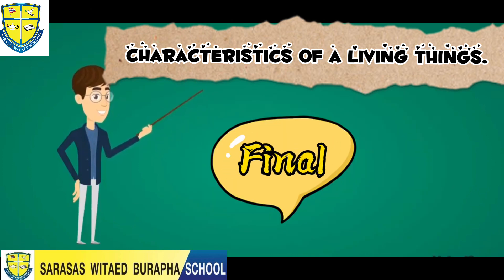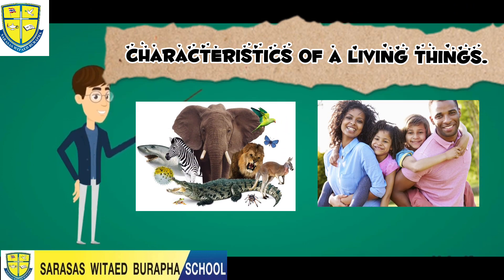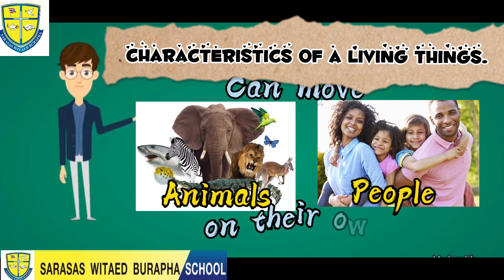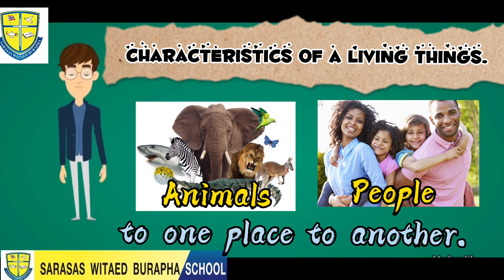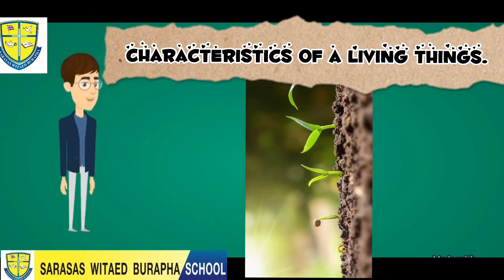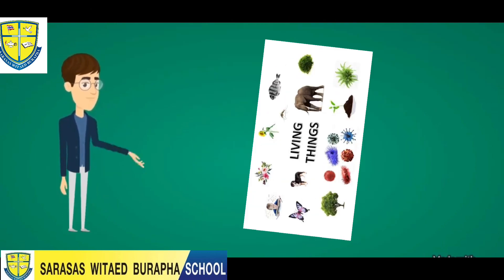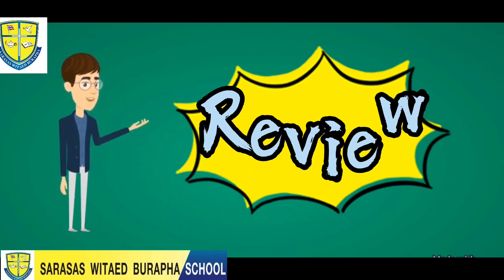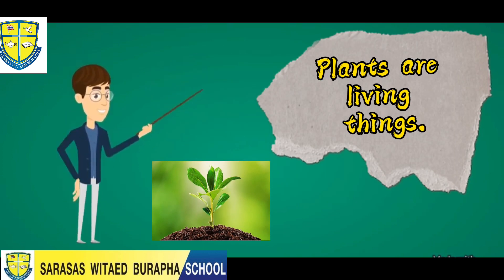Our last characteristic of living things applies only to animals and people, because animals and people can move on their own and can move from one place to another, while plants cannot move on their own. And that is living things.